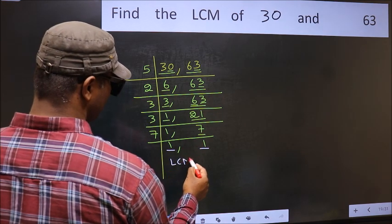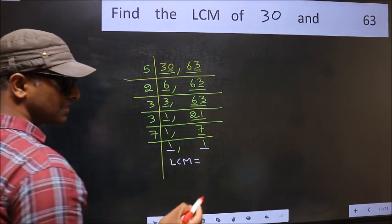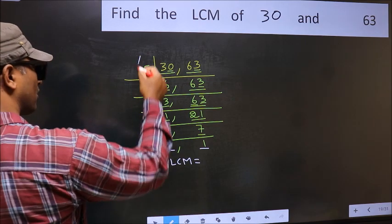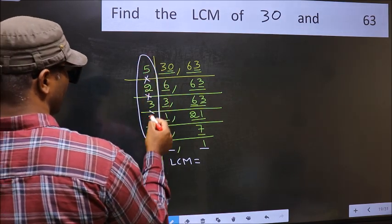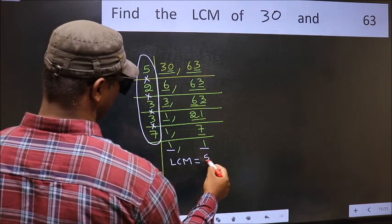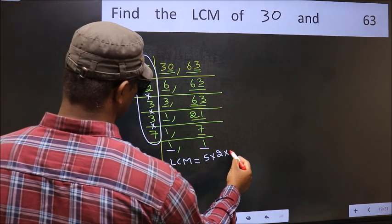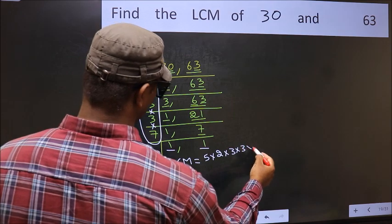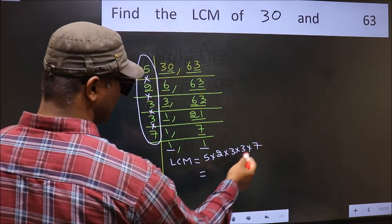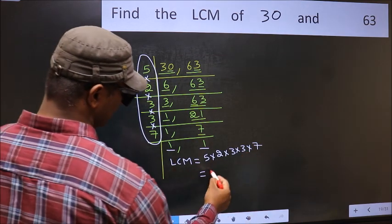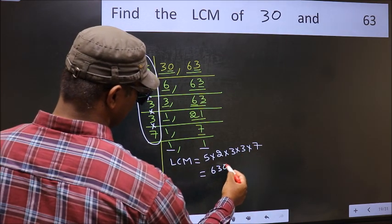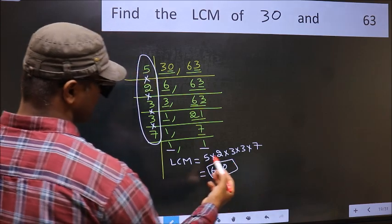So our LCM is the product of these numbers: 5 times 2, times 3, times 3, times 7. When we multiply these numbers, we get 630, which is our LCM.